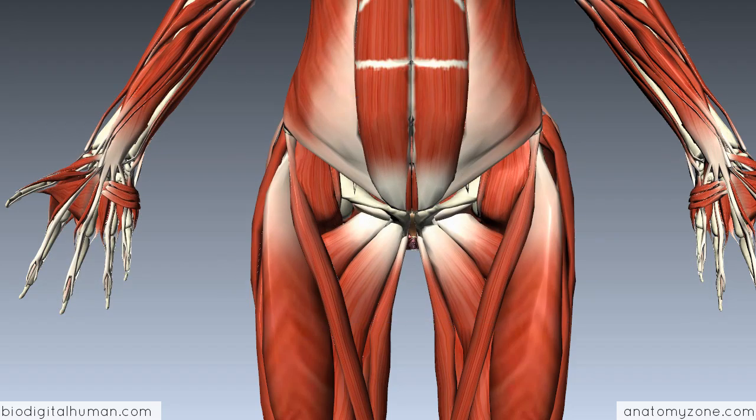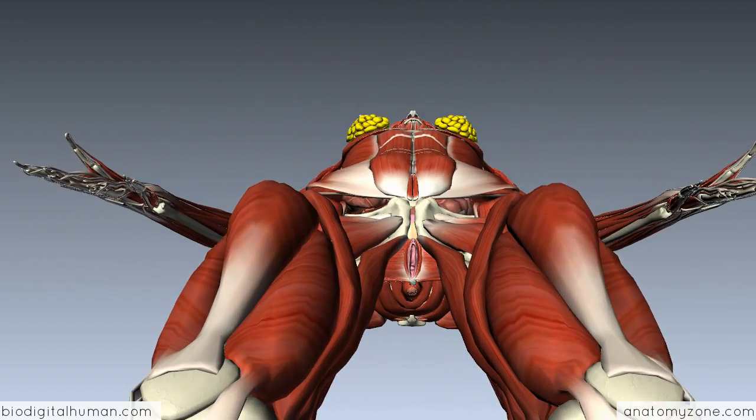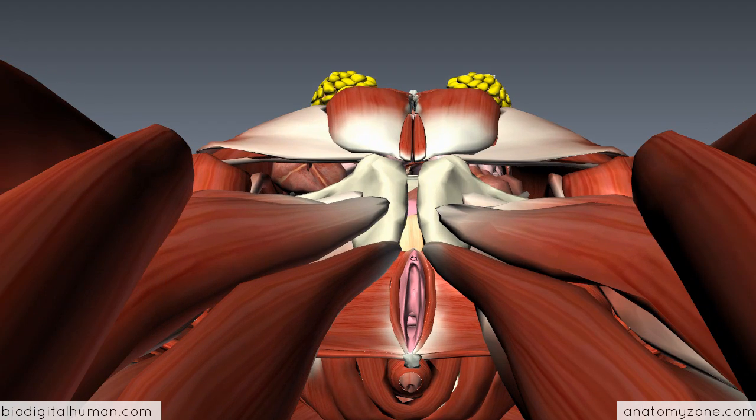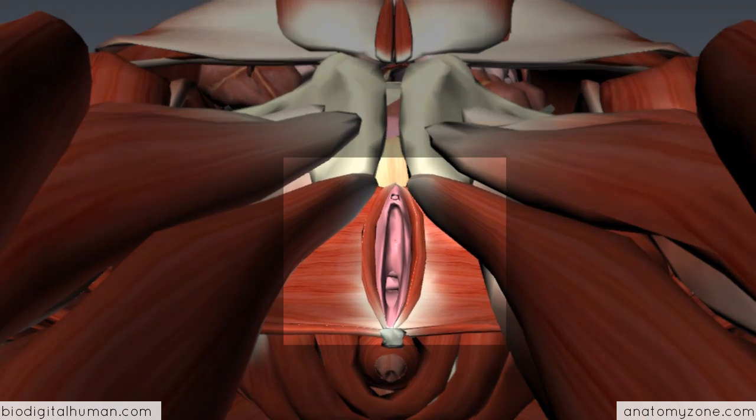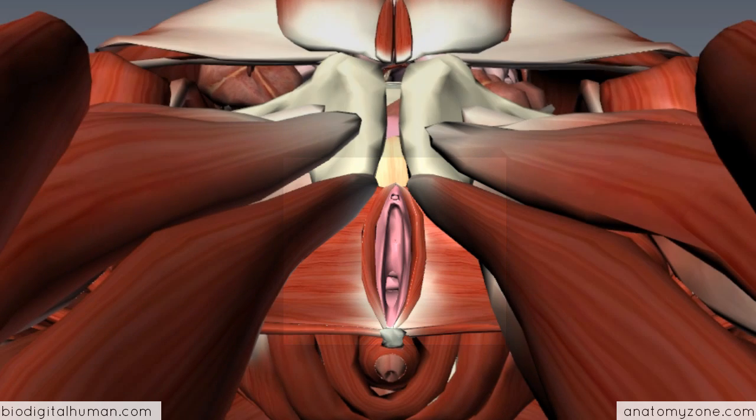So I'm going to rotate this model so we're looking at an inferior view of the external female genitalia. The way that I'm going to explain the anatomy of this area is through a diagram. Looking at the same view, I'm going to talk you through some of the anatomical features of the female external genitalia.